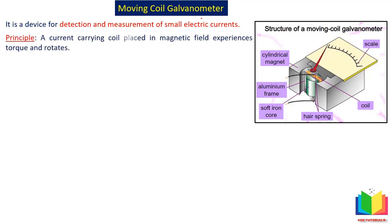Now, what is the principle of galvanometer? A current carrying coil placed in a magnetic field experiences a torque and rotates — this is the principle of galvanometer. We have discussed this in our last video; I will give you the link in the description box. If we have a current carrying coil and we place that coil in a magnetic field, a torque acts on it and it rotates. This is the same principle on which the electric motor works.